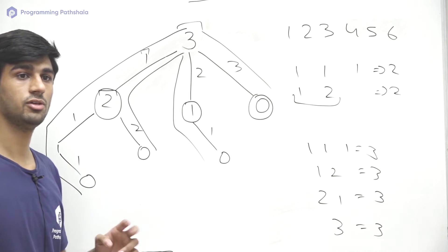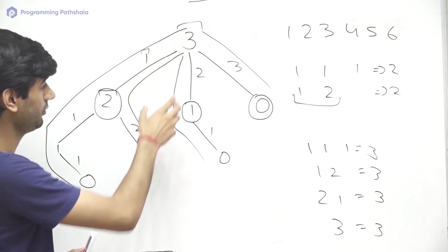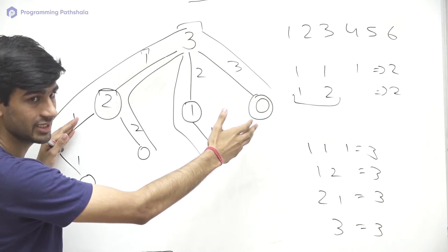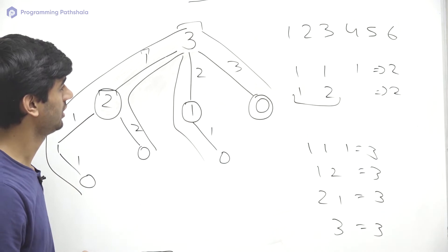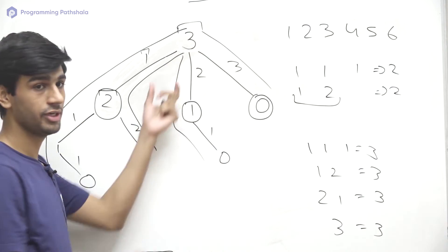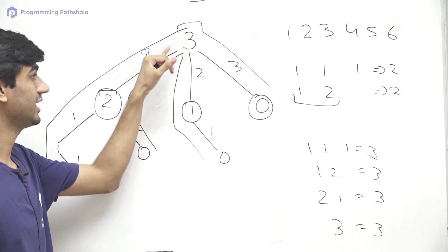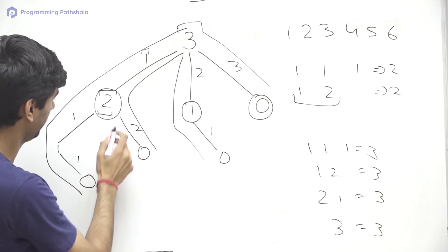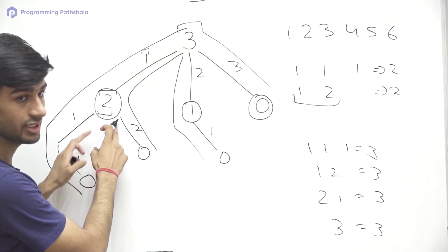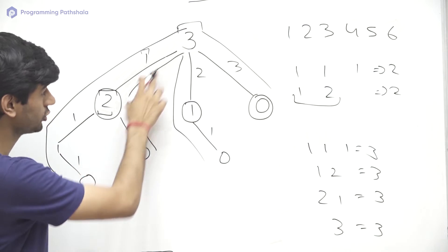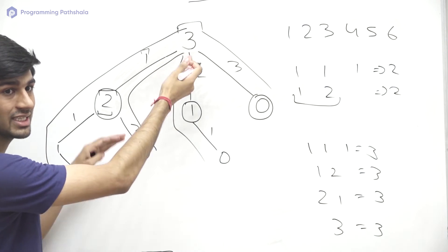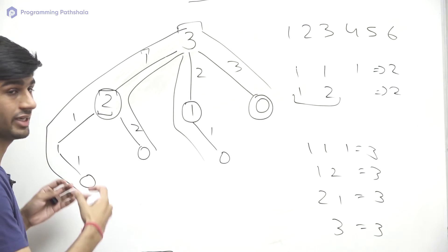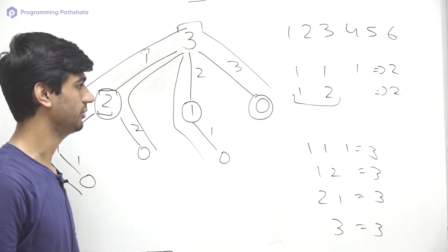From this tree we can observe two things. First, we have multiple options at each step. Second, all those possibilities have the same problem definition — for example, we want the number of ways to get sum 3, then sum 2, and so on. The problem definition is the same, only the size is reducing. Because of these two properties, we can think of a recursive solution.